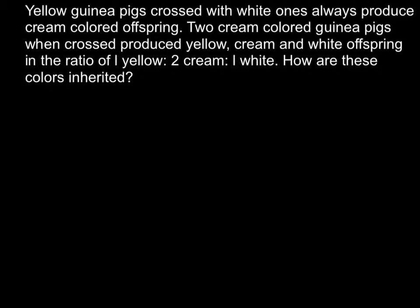Today's problem: yellow guinea pigs crossed with white ones always produce cream-colored offspring. Two cream-colored guinea pigs, when crossed, produce yellow, cream, and white offspring in the ratio of one yellow to two cream to one white.